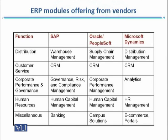For distribution, the SAP module is Warehouse Management. For Oracle and PeopleSoft, that is Supply Chain Management. In the Microsoft Dynamics case, the module is Distribution Management. It is extremely important that you understand which modules are available across the three vendors, so that if your company's focus is to automate the distribution function, you know which module to buy.